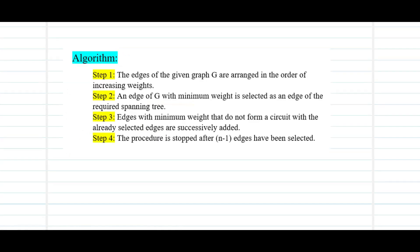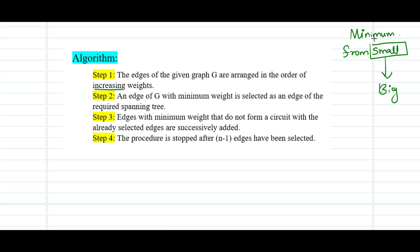Let us get into the algorithm. Kruskal's algorithm first asks us to arrange the edges of the given graph G in order of increasing weight — from small to big. This is because we want a minimum weighted spanning tree, so we begin by adding the smallest edges first, then build the tree by moving edge by edge to add edges with more weight. First, arrange the edges of graph G in increasing order of weight.